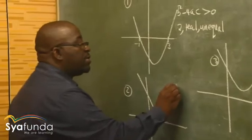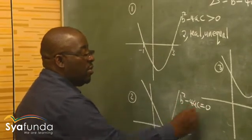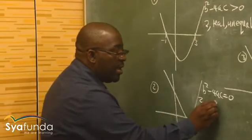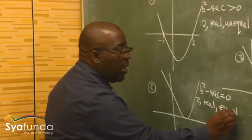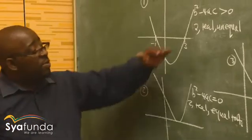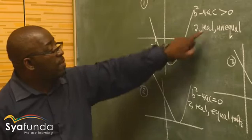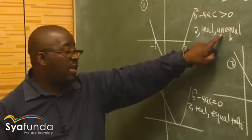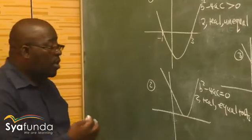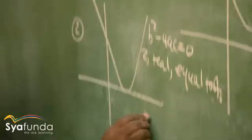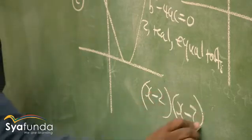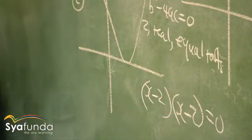What if the discriminant is not positive but equal to zero? If b squared minus 4ac equals zero, you are going to have two real and equal roots. Both cases give two real roots — the difference is that in the first case they are unequal, and in the second case they are equal.